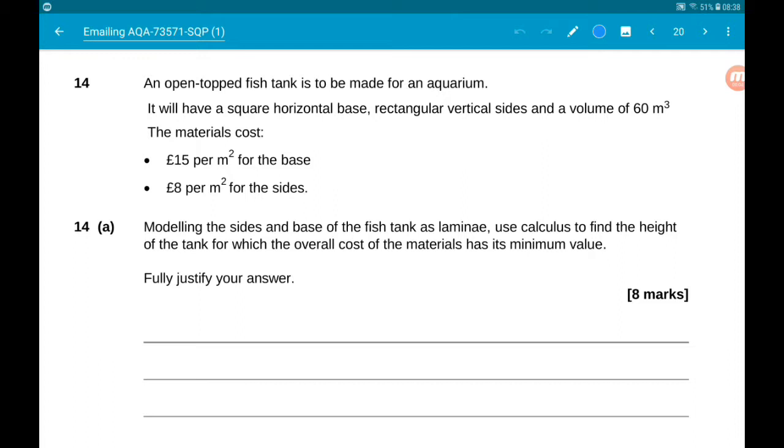14A is another nice 8 marker and a real life differentiation problem. An open topped fish tank is to be made for an aquarium. It will have a square horizontal base and vertical rectangular sides. The materials cost £15 per meter squared for the base and £8 per meter squared for the sides. Modeling the sides and base of the fish tank as laminae, we want to use calculus to find the height for which the cost of the materials is minimum and fully justify our answer.